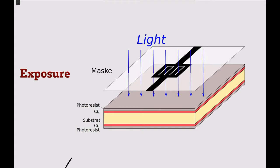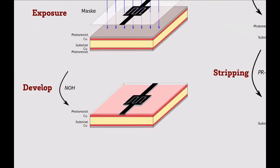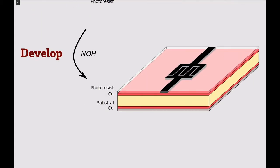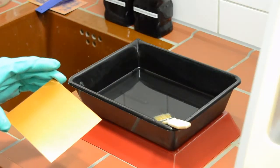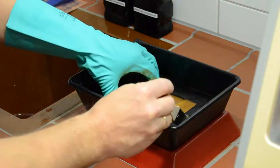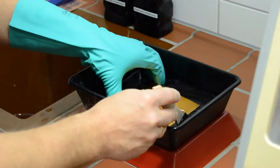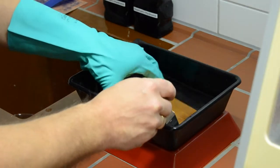After the exposure of the photoresist we have to develop the photoresist in order to remove the exposed sections. This is done by placing the circuit board into a sodium hydroxide solution and wiping off the exposed photoresist.